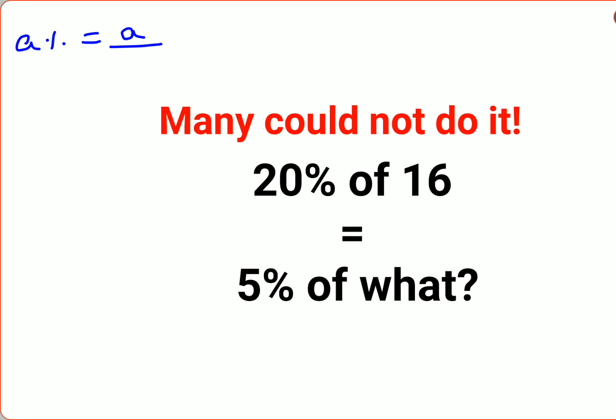So we have 20 upon 100, 'of' means multiplication, 16 equals 5%, so again 5 upon 100 of what. Let that be x.